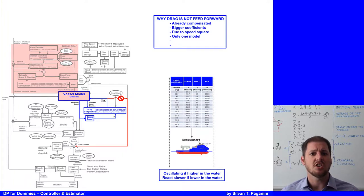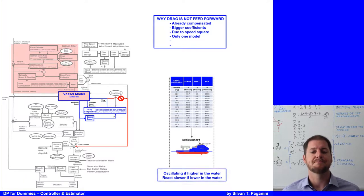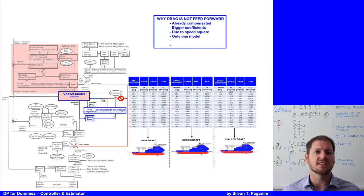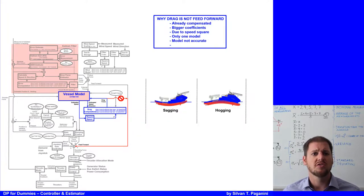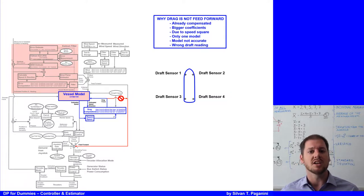Fourth, the drag force is not feed-forwarded because some DP vessels work with only one drag table, so at different drafts the model can be way off. If only one drag table is used, the vessel starts to oscillate when it is higher in the water, and reacts sluggishly when lower. Therefore most vessels use different tables for different drafts. Fifth, drag tables do not account for the hugging and suction effects on the vessel, which is only a very small portion of the offset. Sixth, the draft reading can be wrong and could have a large impact, so it is good practice to enter the draft input manually into the DP system even when measured data is available.